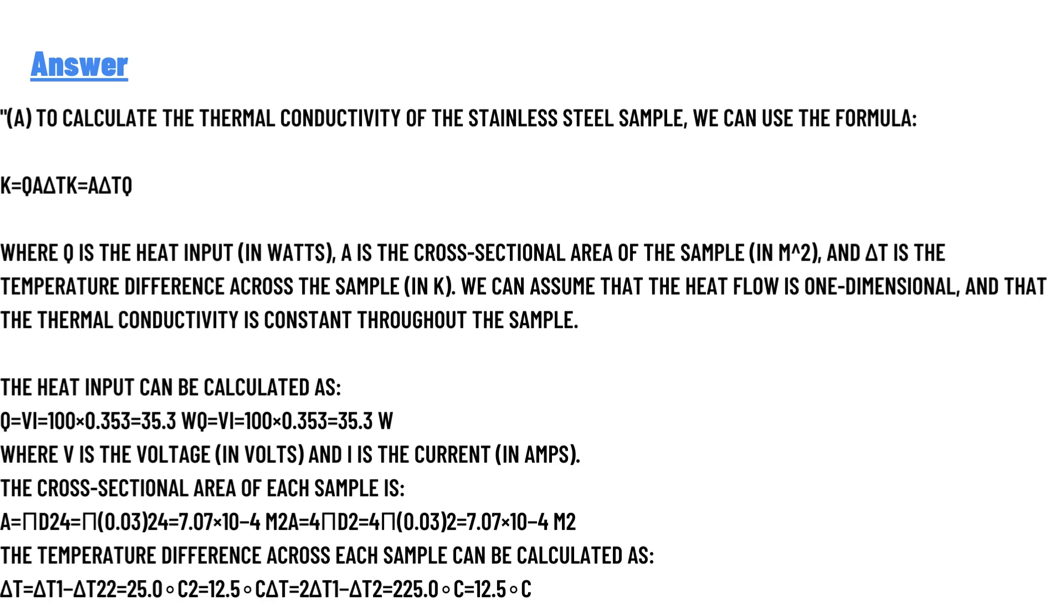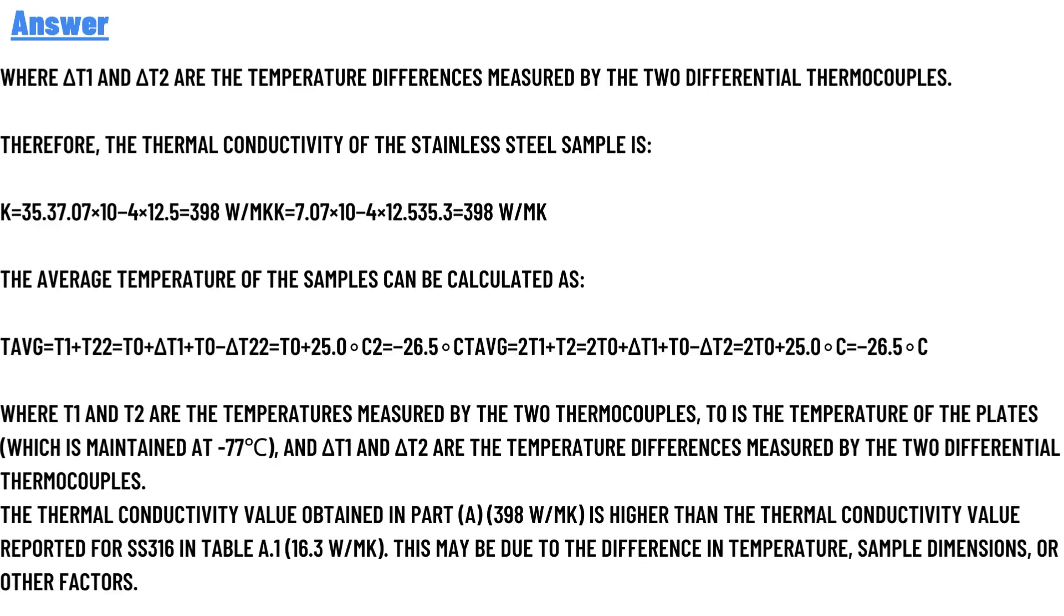The heat input can be calculated as the formula given below, where V is the voltage in volts and I is the current in amps. The cross-sectional area of each sample is given by the formula below. The temperature difference across each sample can be calculated as the formula given below, where ΔT1 and ΔT2 are the temperature differences measured by the differential thermocouples.